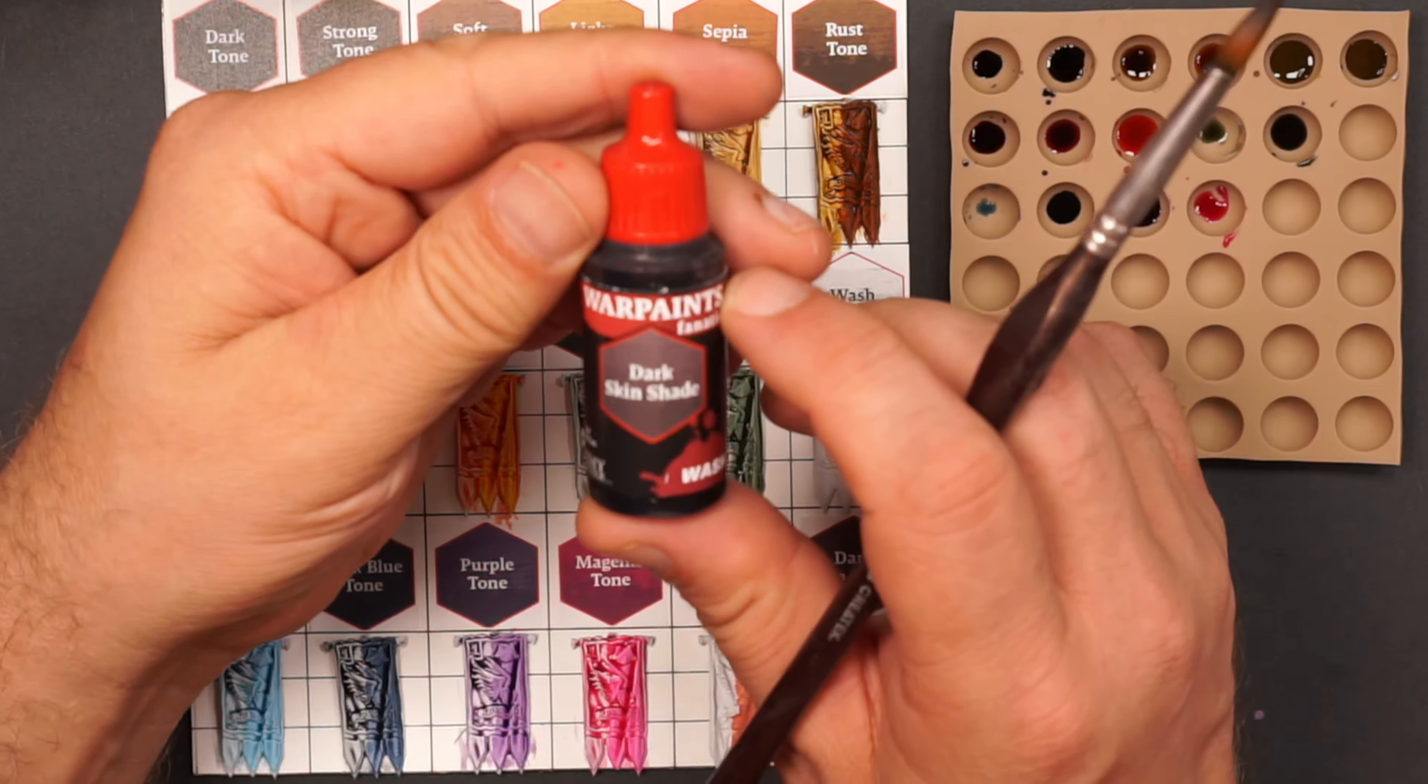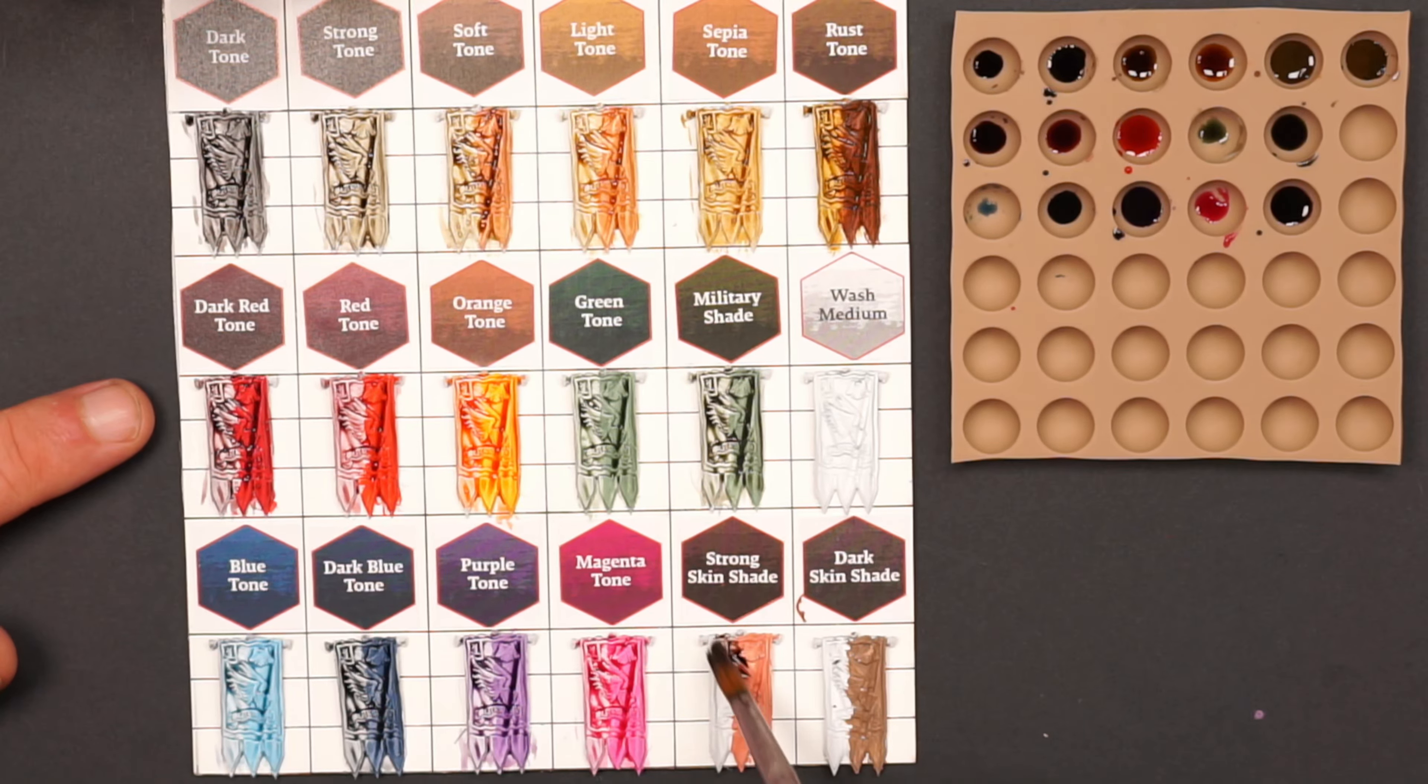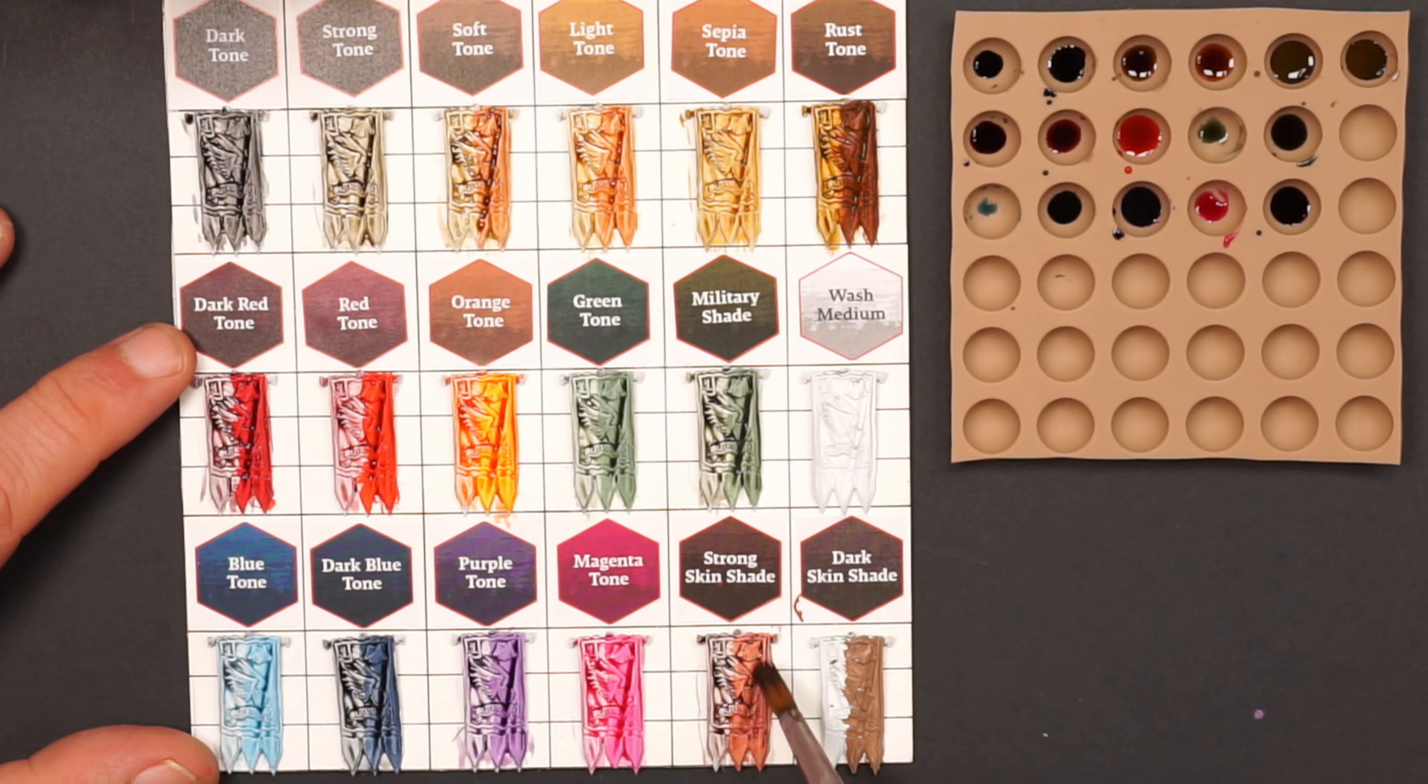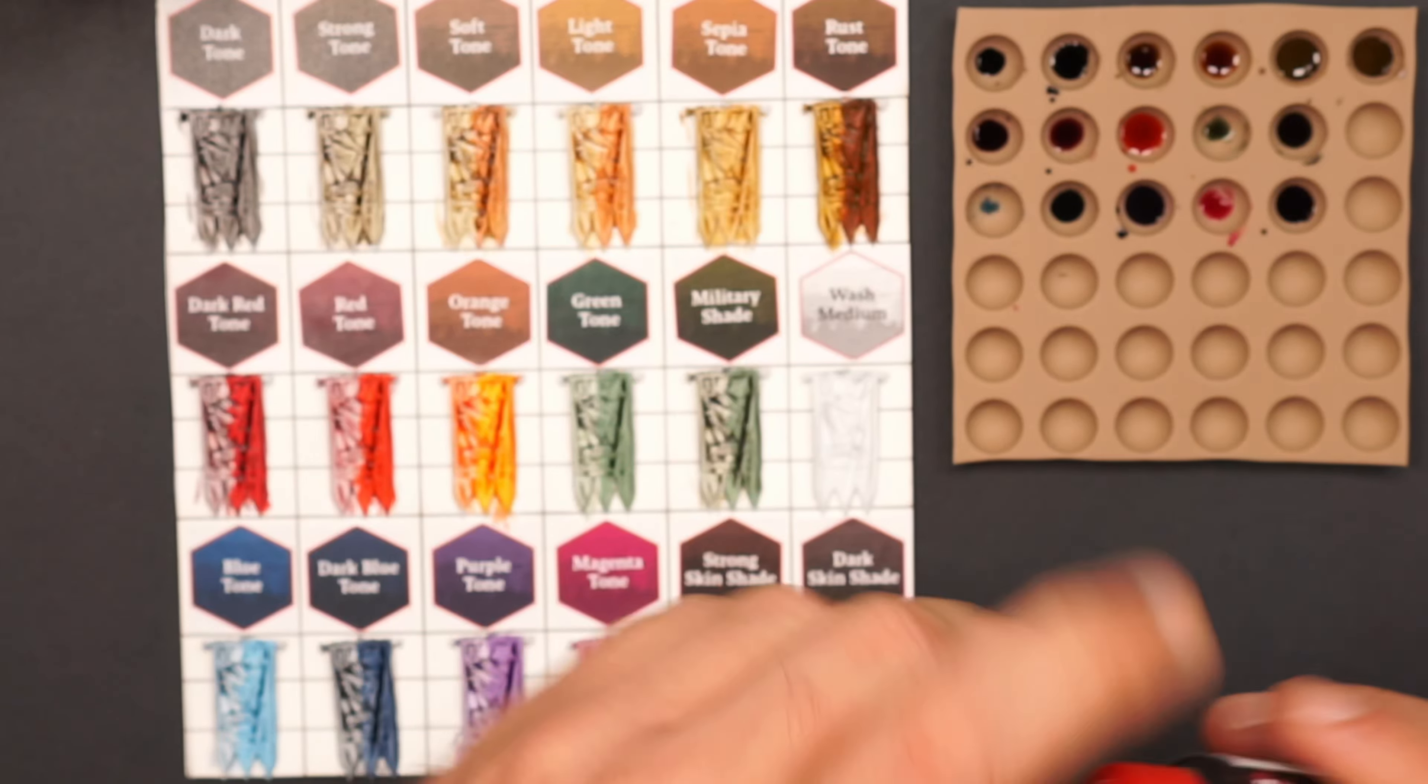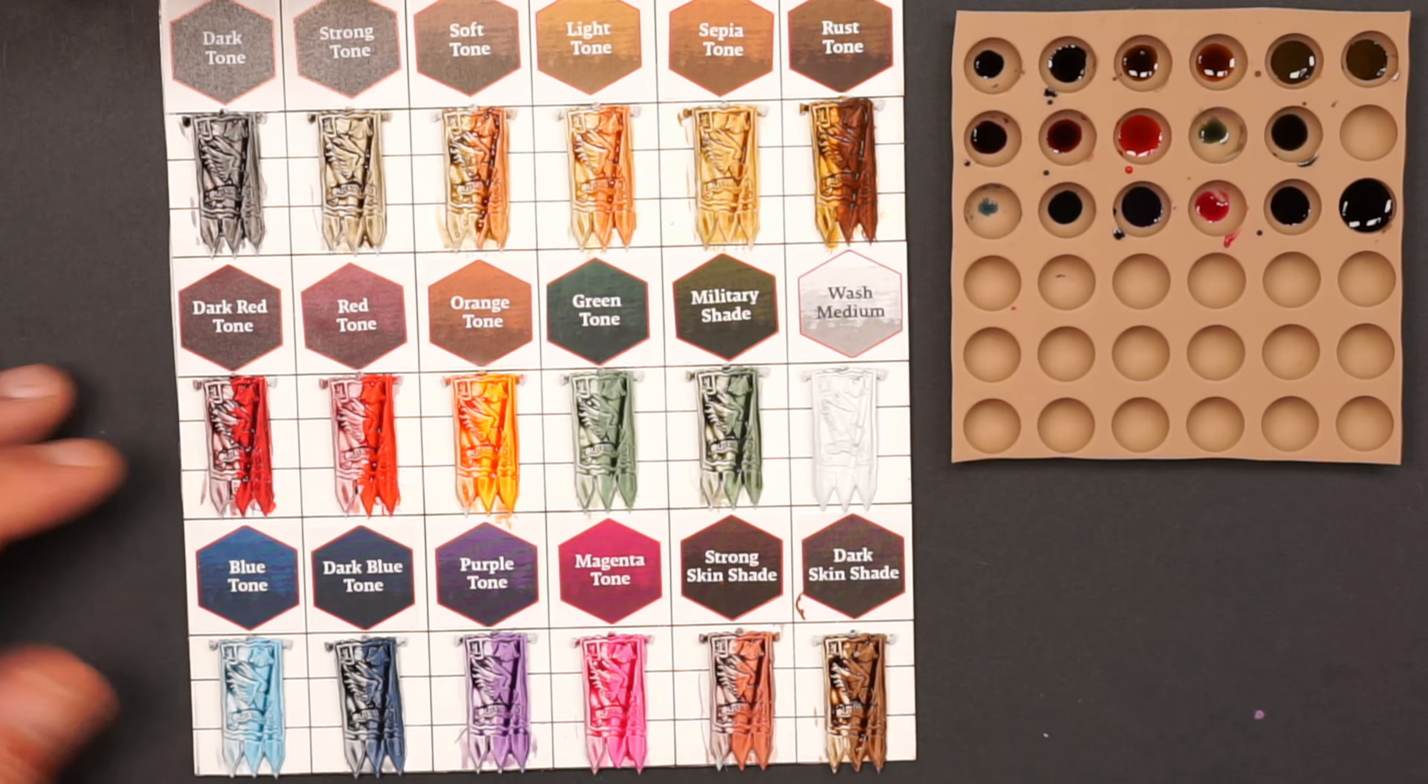I actually did a mistake here. This is the dark skin shade, but I'm going to put it on the label with the strong skin shade. This is a mistake, but I will switch the labels when this is dry. While we're talking about the skin tones and skin shades, in the old set there was only a flesh wash, and I actually think the dark skin shade is the old flesh wash, but I'm not quite sure about that. And here we have the strong skin shade. It will go under the label dark skin shade. I'm sorry about that, but we will fix it later. But maybe it wasn't a mistake switching these two colors around, because I think the strong skin shade matches this brown color very well, and I think it is this combination I will use when painting a miniature with darker skins.